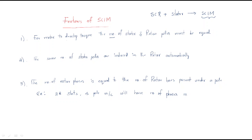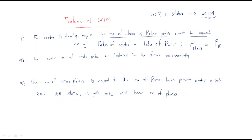The first feature: for the motor to develop torque, the number of stator and rotor poles must be equal. This is the most important condition. Torque is a twisting force — it is the reason for rotation. The essential condition is that the poles of the stator must be equal to the poles of the rotor. If the poles are not equal, there is no rotation.